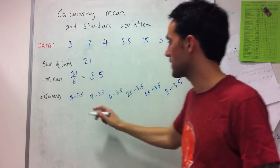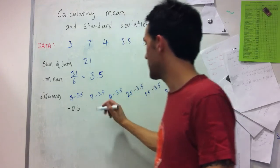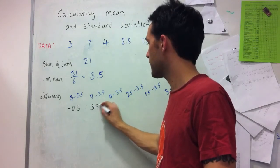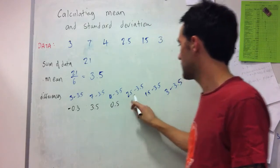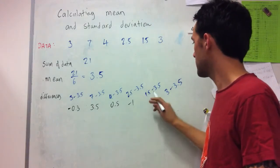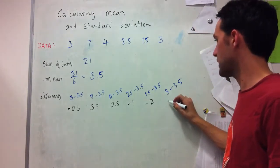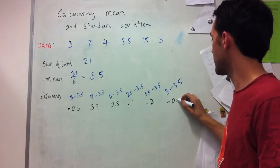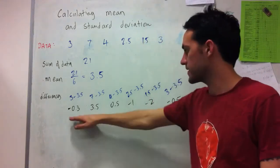So this is going to give us negative 0.5 here. This will give us positive 3.5. This gives us 0.5, negative 1, negative 2, and here negative 0.5 as before. So these are all my differences.